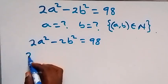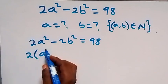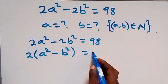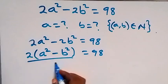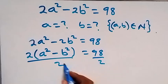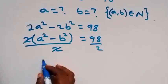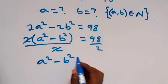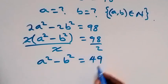On this side we can factor 2 out and we have 2 times the bracket (a² - b²) equals 98. We divide both sides by 2; the two cancels out, and on this side we are left with a² - b², which equals 49.